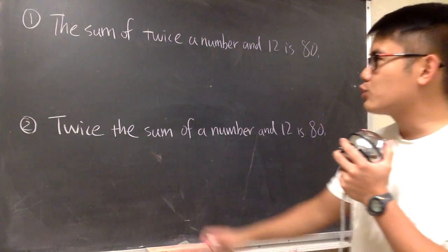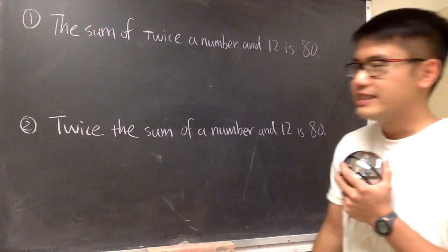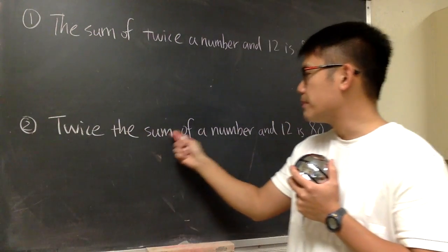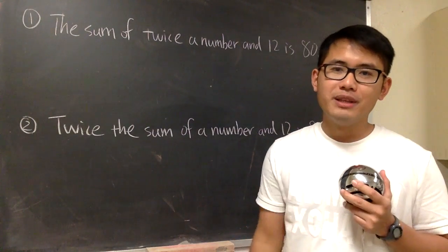We have two word problems on the board. The first one says, the sum of twice a number and 12 is 80. And the second one says, twice the sum of a number and 12 is 80. They sound so similar, right?